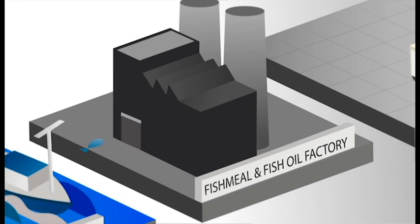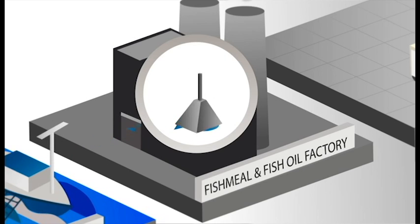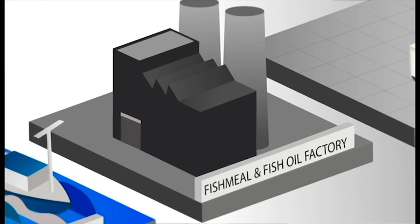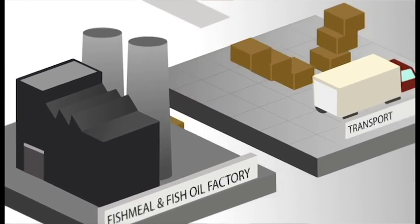Inside the processing factory, these fish are cooked, pressed and dried or refined into fish meal and fish oil. The majority of the fish meal is then transported to a fish feed factory.